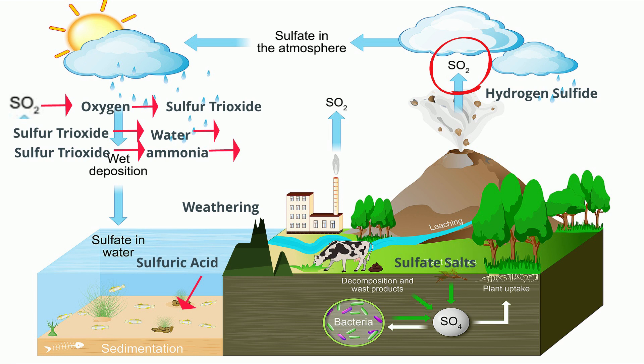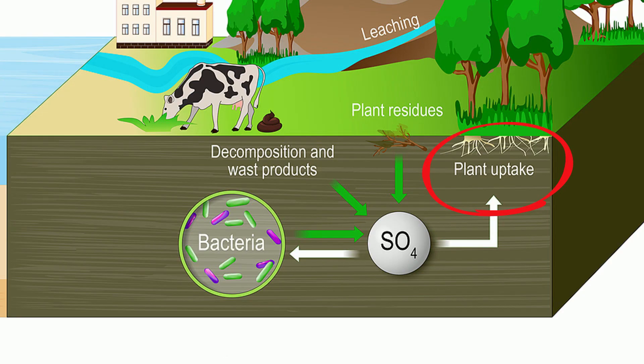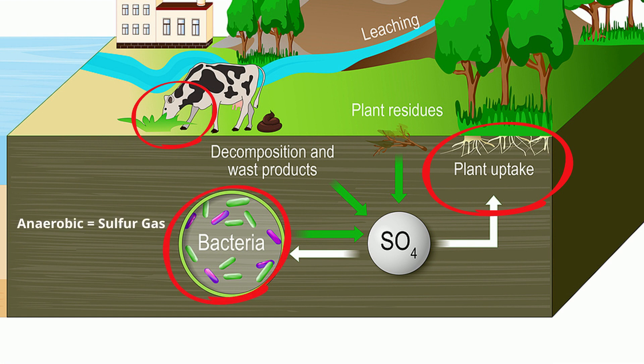Plants then absorb the sulfur by absorbing the sulfate salts from the soil. Animals in turn get sulfur by eating the plants. And the animals release sulfur when they decay. As animals decay, they release sulfate salts and hydrogen sulfide.